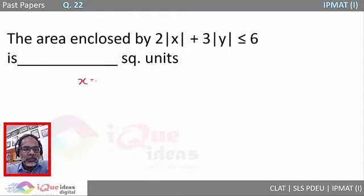Let's first assume that the value of x is equal to 0. So 3|y| is less than or equal to 6. So for the max values we can have y is equal to plus or minus 2.